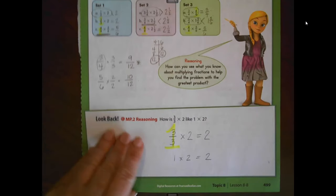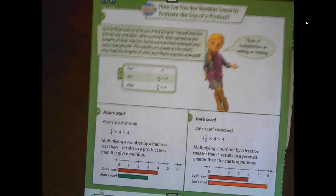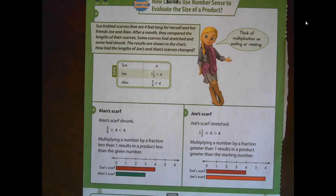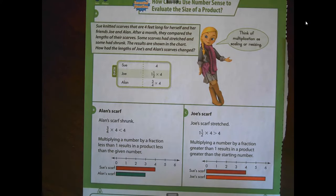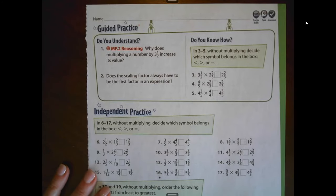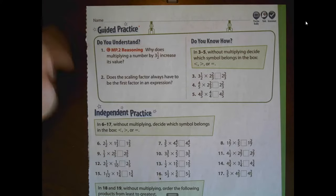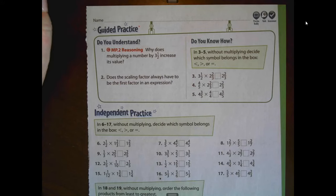On the next page you do have the visual learning scenario. You're welcome to watch the video in our Google Classroom — it's a relatively short video re-explaining the same things I just talked about, but we're going to go ahead and do a couple problems and see if you guys get the hang of this. In numbers three through five, without multiplying, we're going to decide which symbol belongs in the box.